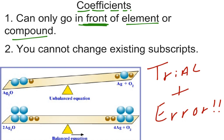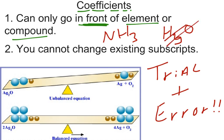It's critical that you cannot change any existing subscripts. For example, if I had H₂O or NH₃, I cannot change the subscript of H₂ to H₃ to balance my equation — that's a major violation. Likewise, I cannot change the subscript 3 to a 4. That will get you absolutely no points. What we're trying to do is get an unbalanced equation balanced using coefficients, and they always go in front.